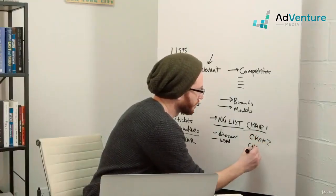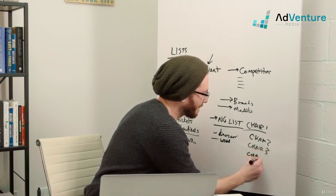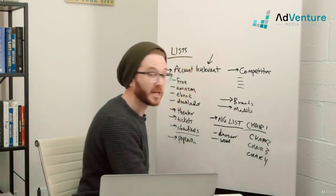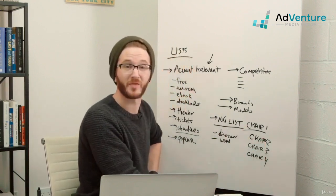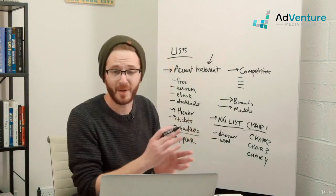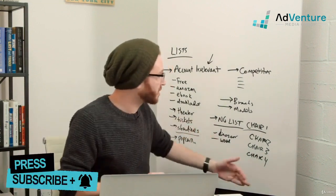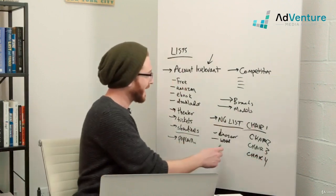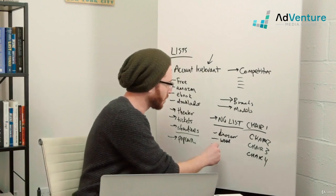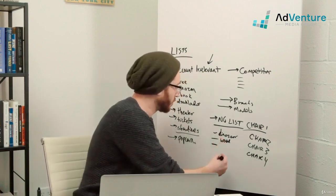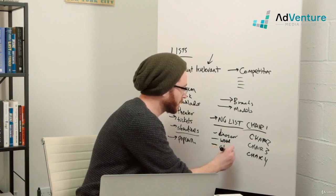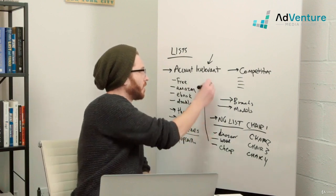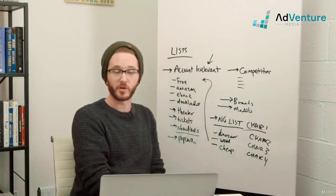Let's say those campaigns are broken out by match type, by different types of chairs, different locations, different budgets, or different hours of the day. You might have campaigns broken out in many dimensions for similar top-level product categories. Now if I add a keyword like 'cheap' — because let's say I don't sell cheap chairs but I do sell cheap accessories — I don't want 'cheap' to be account irrelevant because I want to show up for searches like 'cheap office accessories'.